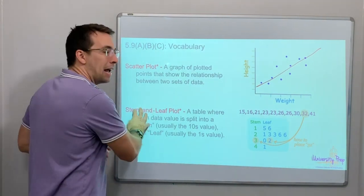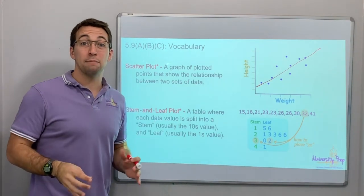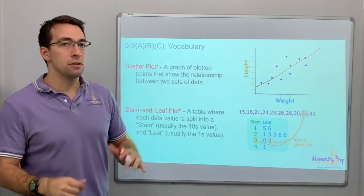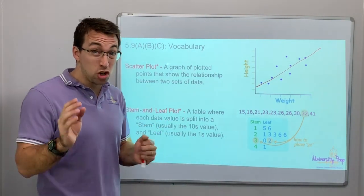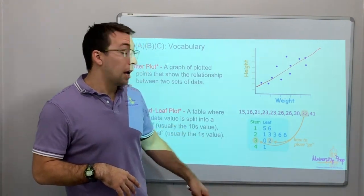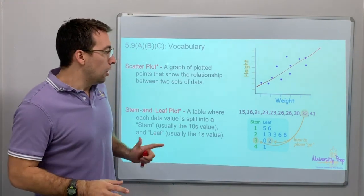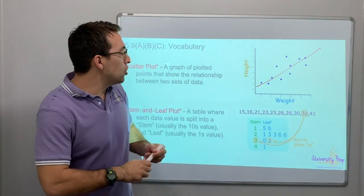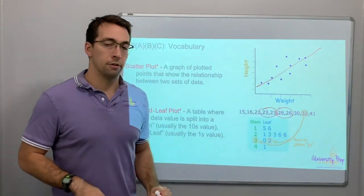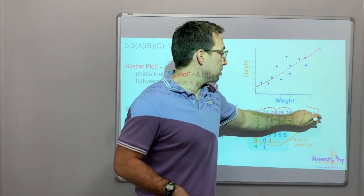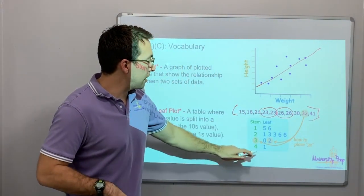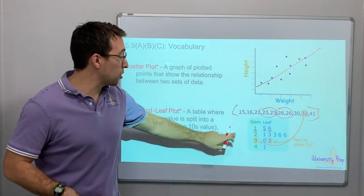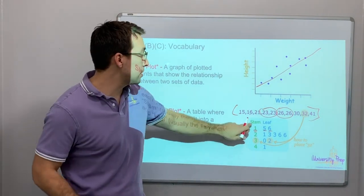Stem and leaf plot. You will absolutely have at least one question about stem and leaf plots on your STAAR test. It's a table where each data value is split into the stem — that's usually going to be the tens place — and the leaf, which is usually the ones value. Look at 15, 16, 21, 23, 23, 26, 26. So we have two 23's and two 26's here — this is just a list of numbers. Notice here's our stem: 15 and 16. How many numbers were in the teens? Two. Two data entries were in the teens: 15 and 16.